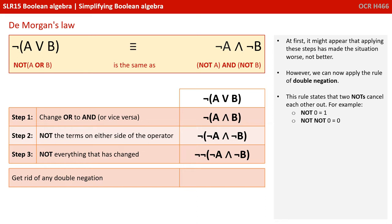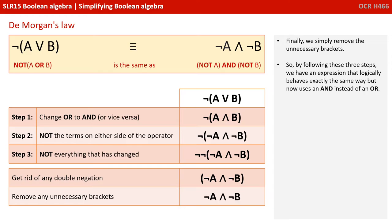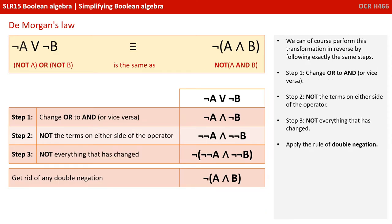Now at first it might appear that applying these steps has made the situation worse, not better. However, we can now apply the rule of double negation. This rule states that two NOTs cancel each other out. For example, NOT 0 equals 1, and NOT NOT 0 equals 0. Finally, we simply remove the brackets because they are no longer necessary. So by following these three steps, we have an expression that logically behaves exactly the same way as the start, but now we're using an AND instead of an OR. Of course, we can perform this transformation in reverse by following the exact same steps.